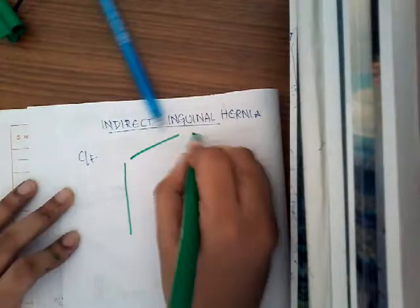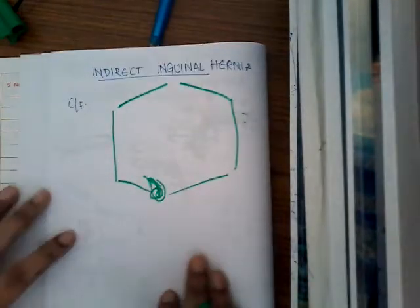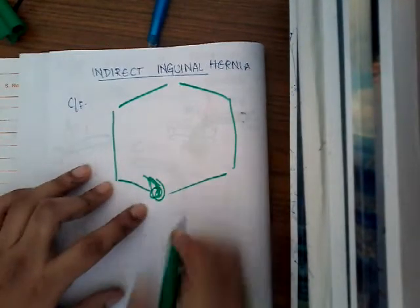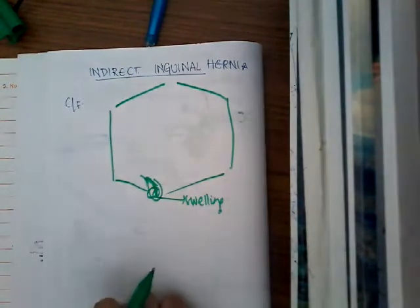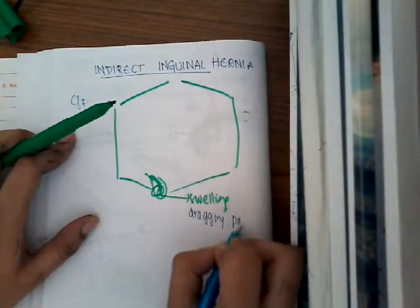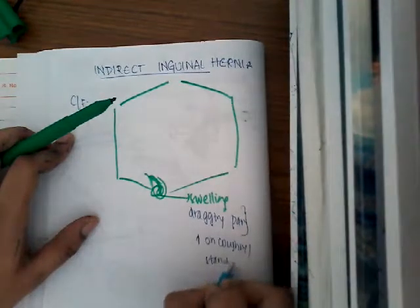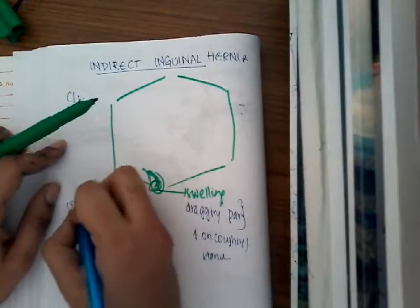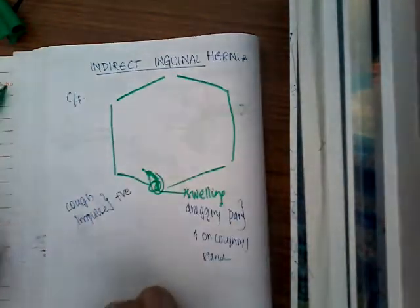What are the clinical features of indirect inguinal hernia? The first clinical feature is swelling in the groin. This swelling is associated with dragging pain. Both the pain and swelling are increased on coughing or on standing. Because they are increased on coughing, the most important feature here is cough impulse, which in indirect inguinal hernia is positive.